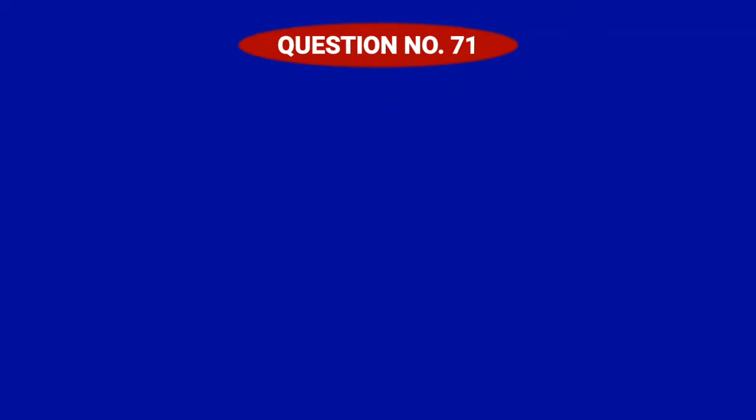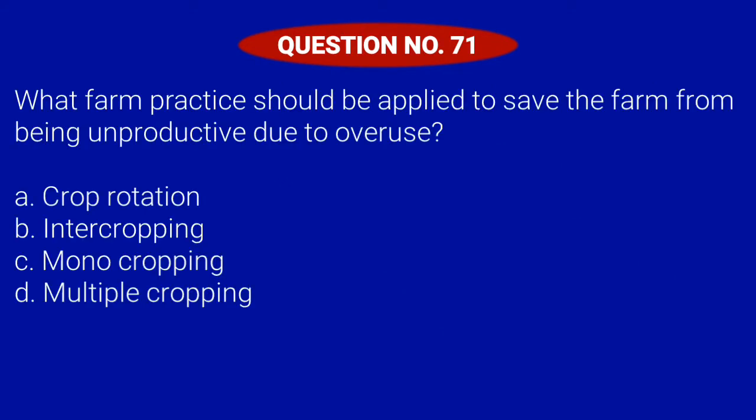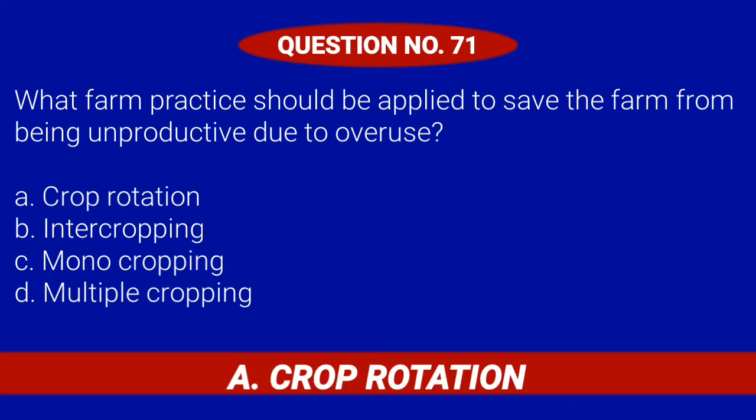Question number 71. What farm practice should be applied to save the farm from being unproductive due to overuse? Letter A: Crop rotation. Letter B: Intercropping. Letter C: Monocropping. Or Letter D: Multiple cropping. Correct answer is Letter A: Crop rotation.